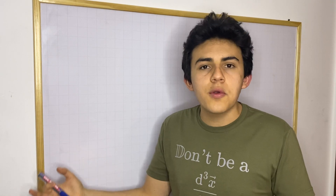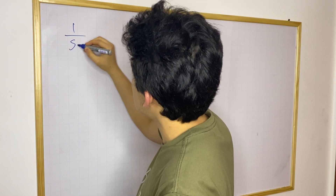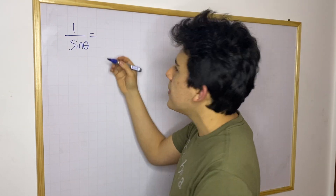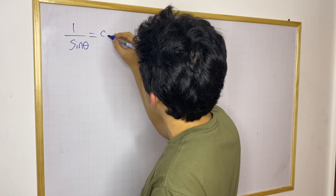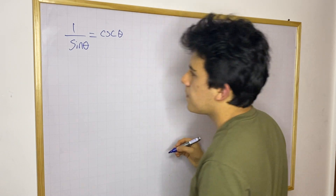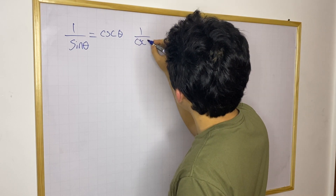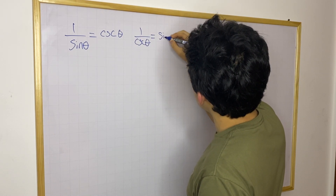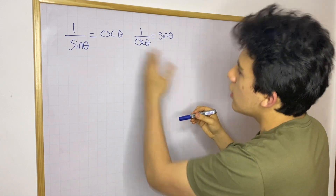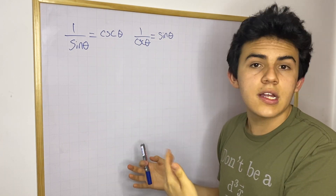When you say identity you're basically referring to an equation. So let's say we have 1 over sine of theta. If you have 1 over sine theta, this is simply going to be equal to cosecant — we write csc — that is cosecant theta. This also implies that 1 over cosecant theta is equal to sine theta. And from this you can reason that cosecant theta times sine theta is going to be 1.